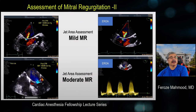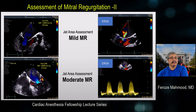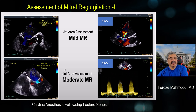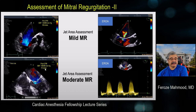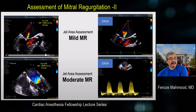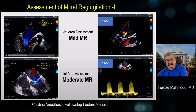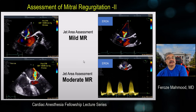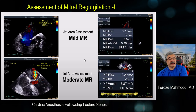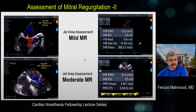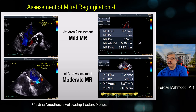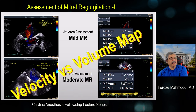A classic example of jet area limitations: the same patient in pre-bypass with normal hemodynamics has MR graded as trace to mild, and in the post-bypass phase with blood pressure of 140/80 mmHg the jet appears larger and is graded as moderate MR by simple visual qualitative assessment using jet area. However, using PISA in both situations yields an effective regurgitant orifice area of 0.2 cm², consistent with mild MR — demonstrating that jet area primarily reflects turbulence, not effective regurgitant orifice area or volume. It is a velocity map, not a volume map.